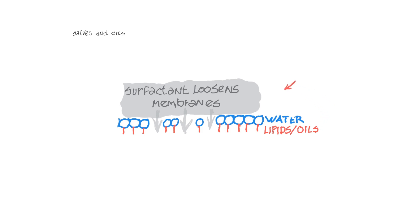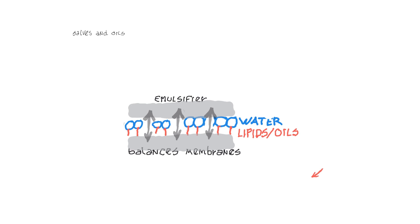A surfactant loosens the membranes so that whatever is outside the membrane can pass through. An emulsifier is a particular kind of surfactant that balances the membranes between water and oils, allowing for passage in and out of the membrane.